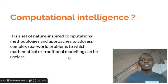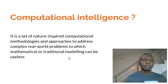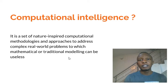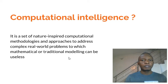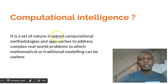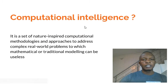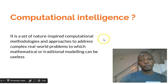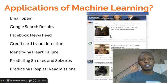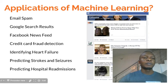In computational intelligence, it mainly makes use of three types of algorithms: neural networks, fuzzy logic, and evolutionary algorithms.